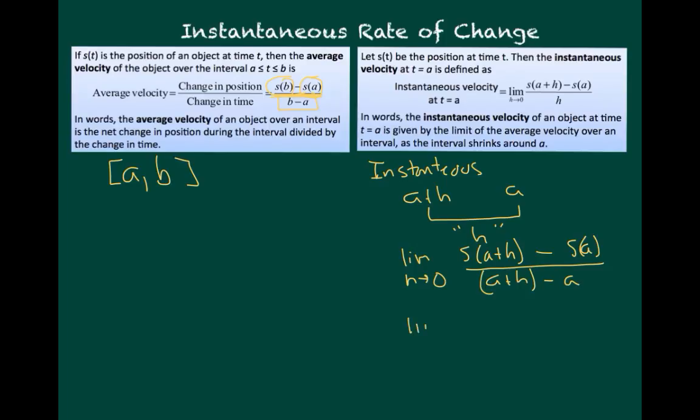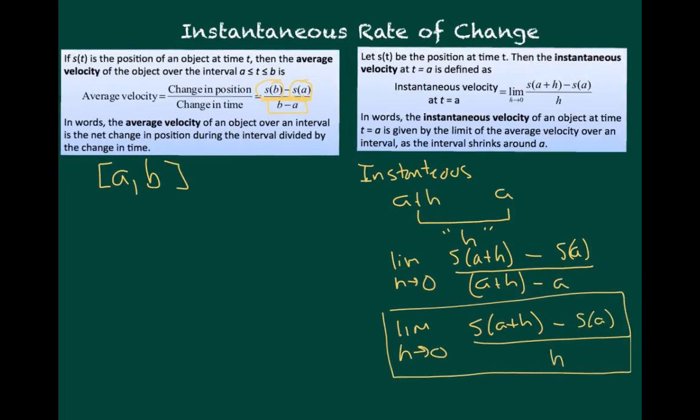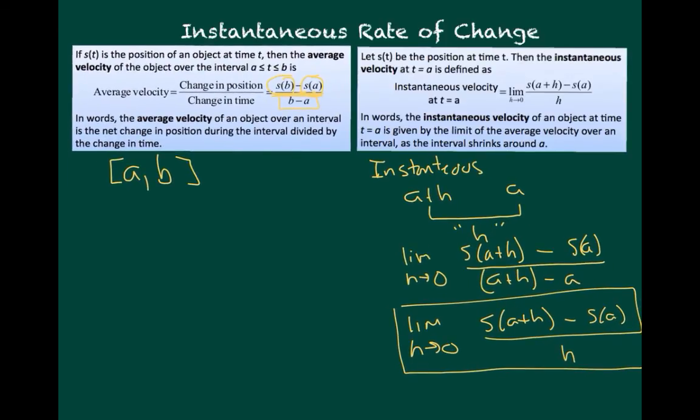Well, when you simplify that, you have the limit as h approaches zero of s(a+h) minus s(a), but the denominator simplifies to just plain old h. And this is our definition of instantaneous velocity. The most important difference from average velocity is that average velocity was just s(b) minus s(a) divided by b minus a. So you can see that with instantaneous velocity, we're taking the limit. And that becomes the biggest difference between these two definitions.